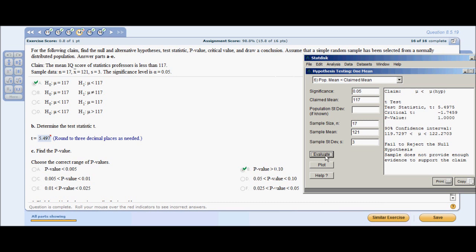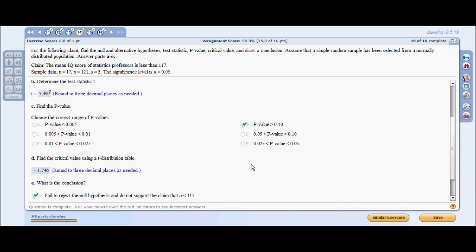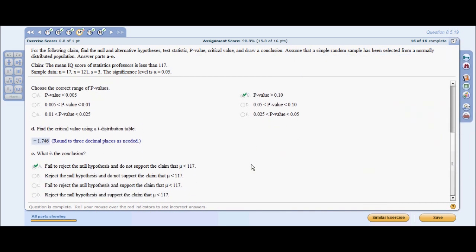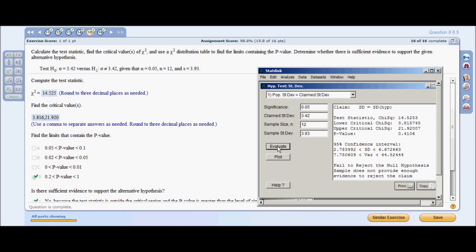For part C, we got a p-value of 1. So wherever you see the word p-value, substitute in the number 1 and choose the answer that makes the statement true. In this case, 1 is greater than 0.10. Part D, you just plug that in. And for E, you throw in your standard conclusion.